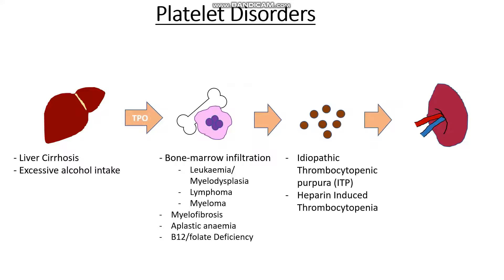We could also have an intrinsic issue with how platelets interact with each other. When platelets are activated they bind using a receptor known as GP2B3A. If that receptor is missing or dysfunctional, the platelets cannot bind — this is a condition called Glanzmann's thrombocytopenia. Another issue is when platelets have difficulty binding to von Willebrand factor using the GPA1B receptor, which is called Bernard-Soulier syndrome.